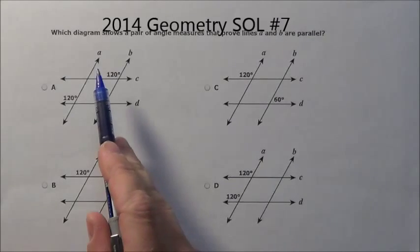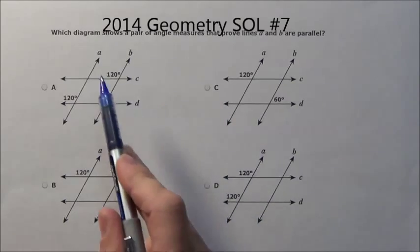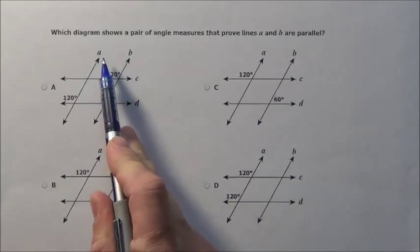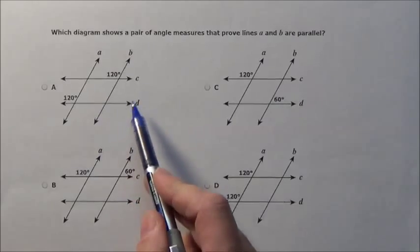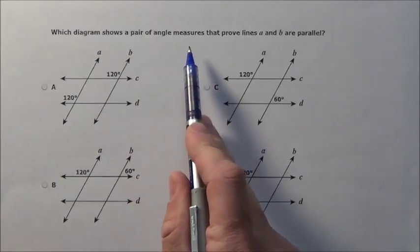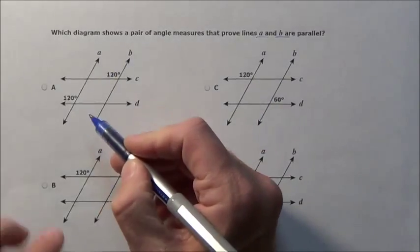Here's number 7. It says, which diagram shows a pair of angle measures that prove that A and B, these lines going almost vertically, are parallel? They try to trick you a bit with this C and D looking parallel and possibly being parallel, but that's not what it asks. It asks you to prove that A and B are parallel, these guys.